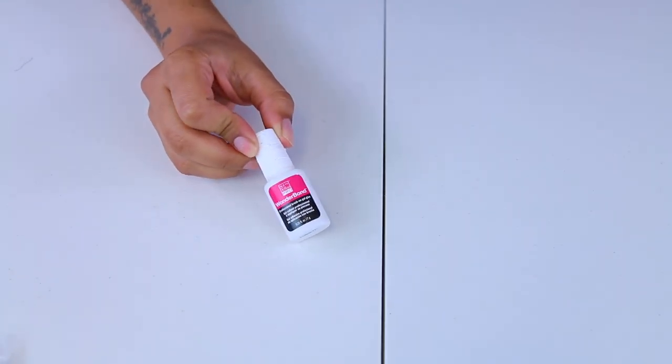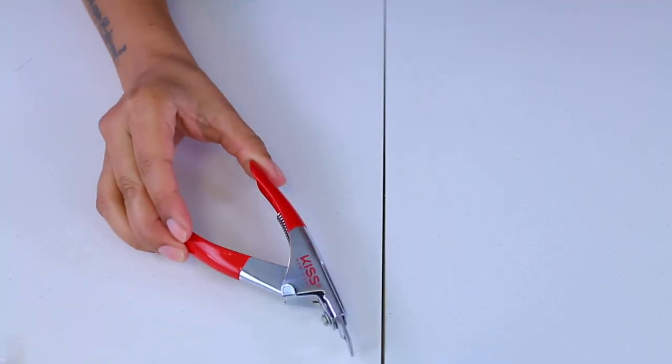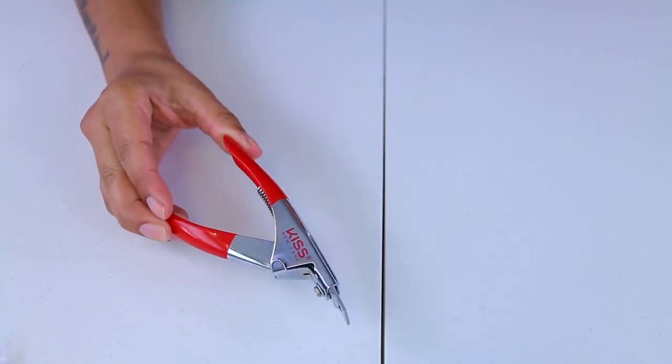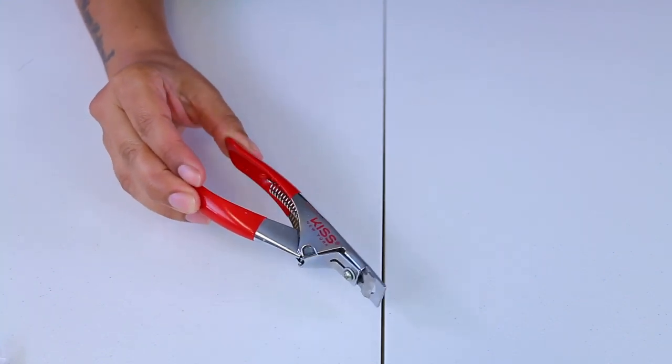This is my favorite one, the Wonder Bond from Sally's. I haven't tried any other brand, but I really enjoyed this one. You're also going to need an acrylic nail clipper to clip the nails if you want them a little bit shorter.